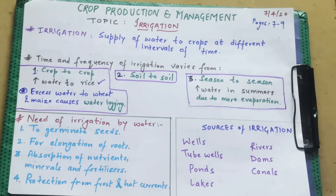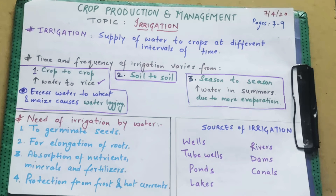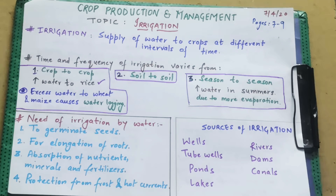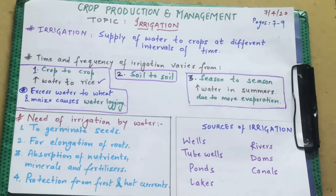Continuing with the chapter of crop production and management, in basic practices of agriculture we have talked about preparation of soil, sowing, and adding of manure and fertilizers. After all of these, when you have added fertilizers and all things, you have to give water once again. So let's talk about irrigation — what is irrigation?